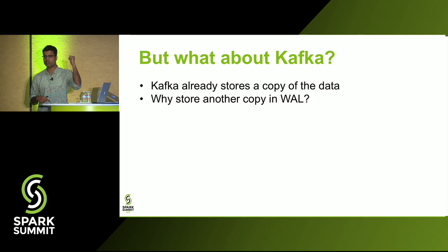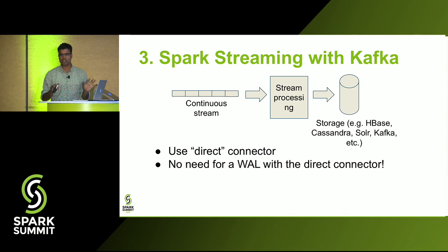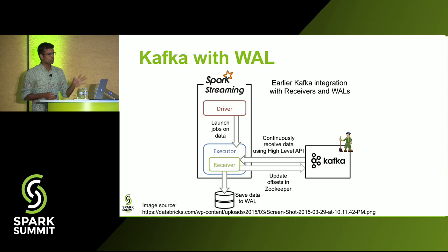For Kafka: if you're reading from Kafka, you already have three copies there, and making three more copies in the write-ahead log seems excessive. For Kafka there's a separate direct connector — use the direct connector instead of receivers for Kafka. Higher throughput is the biggest benefit. There is no need for a write-ahead log with the direct connector.